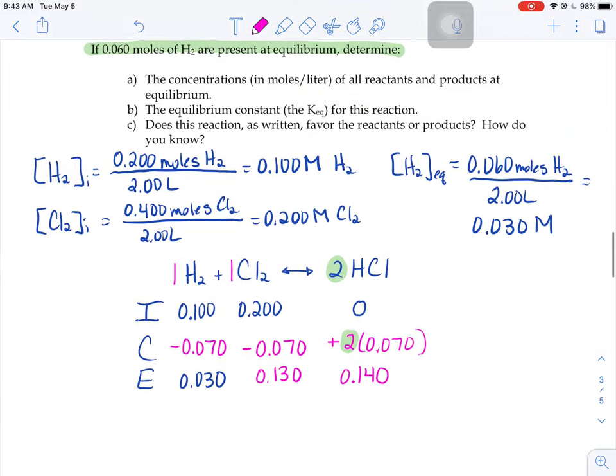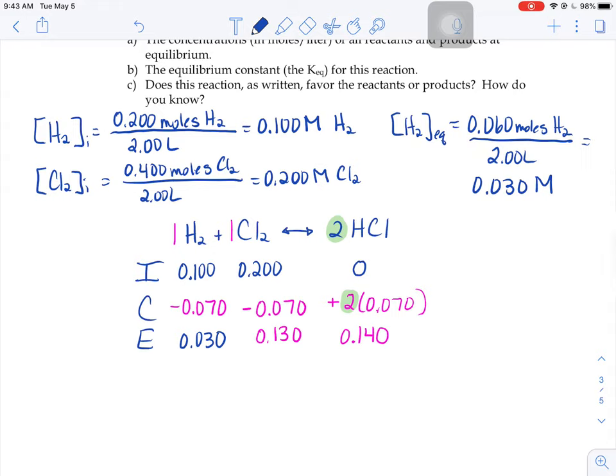So part a up above asked us to find the equilibrium concentrations of all reactants and products. Right here, here's your part a. There's your equilibrium concentrations. All of these guys would have units of capital M. They're all molarities. So there's part a.